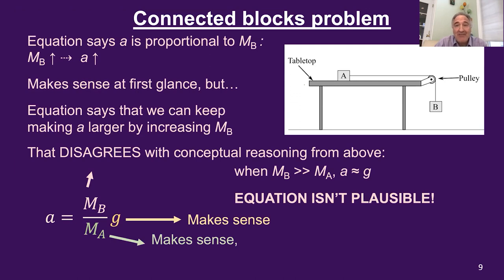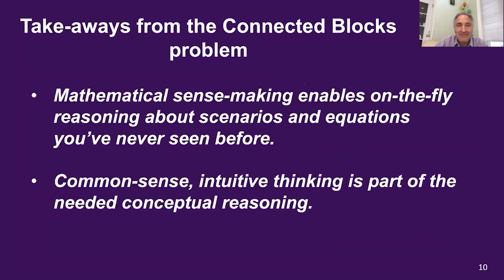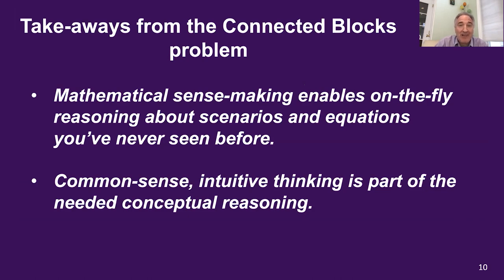So even before deriving the correct equation, we can conclude this equation is incorrect. Takeaways from this problem: mathematical sensemaking enabled us to reason on the fly about an equation we hadn't seen before — whether correct or incorrect. Another key takeaway is that when reasoning through the equation, mathematical reasoning wasn't in place of common sense conceptual reasoning — it was combined with, integrated with, common sense intuitive reasoning. And that is the heart of mathematical sensemaking.